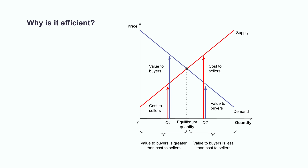In other words, prices could get higher because the value to buyers is higher. However, the total surplus would then decrease. Similar events occur whenever the quantity exceeds the equilibrium level. In this case, the cost to sellers would be higher than the value to the consumers, so consumer surplus is null. As a result, this equilibrium consists in an allocation of resources that is efficient.